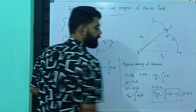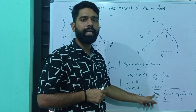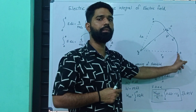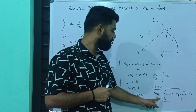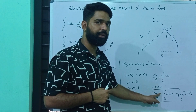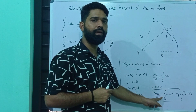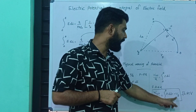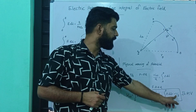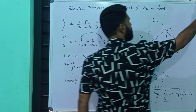The physical meaning: electric potential at a point equals the work done in bringing a unit test charge from infinity to that point. The SI unit of electric potential is joules per coulomb, or volt. The negative sign indicates that the electric field direction and the direction of increasing potential are opposite.